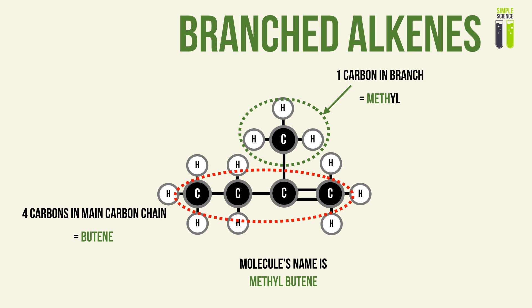In the branch, we have one carbon atom. The branch gives a prefix of 'methyl', and the suffix follows the name of the main carbon chain. In this case, we have four carbon atoms in the carbon chain, so it's going to be butene. The whole molecule's name is methylbutene.